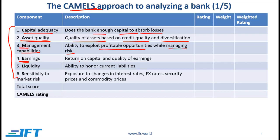E stands for earnings, which has to do with the return on capital as well as quality of earnings. Obviously, return on capital is relative to the cost of capital. L is for liquidity — a bank's ability to honor current or short-term obligations. S is for sensitivity to market risk, which has to do with a bank's exposure to changes in interest rates, FX rates, security prices, and commodities.